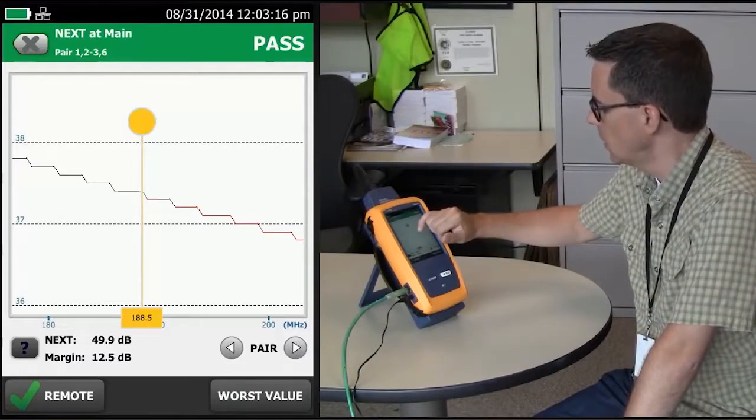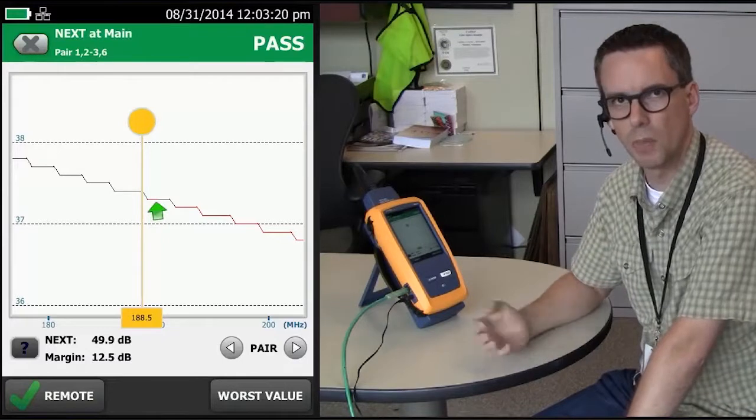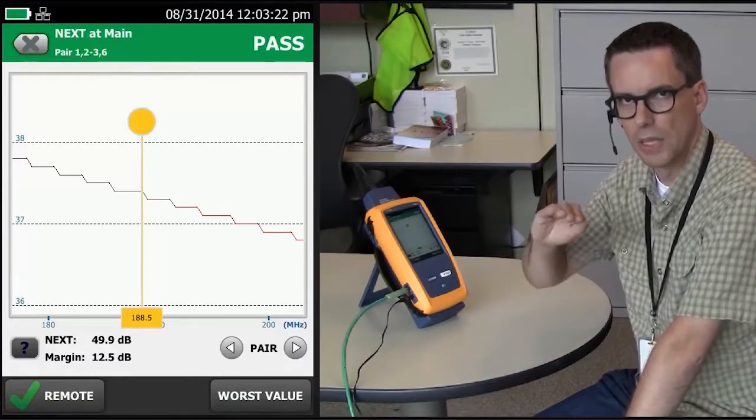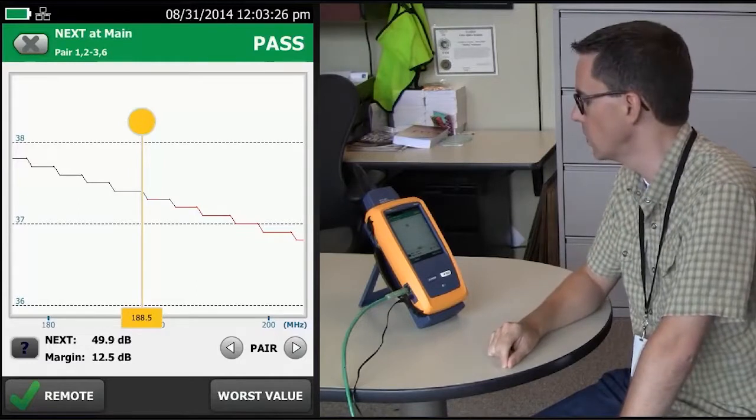You'll notice a little bit after that it goes red and then black and then red again, and that's because of something called insertion loss deviation. It's not exactly smooth, the insertion loss, particularly when you're doing high frequency testing.